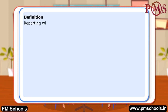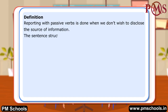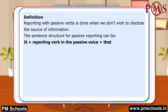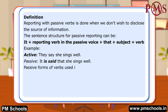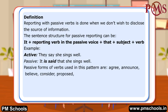Definition: Reporting with passive verbs is done when we don't wish to disclose the source of information. The sentence structure for passive reporting can be: it plus reporting verb in the passive voice plus 'that' plus subject plus verb. Example — Active: They say she sings well. Passive: It is said that she sings well. Passive forms of verbs used in this pattern include: agree, announce, believe, consider, propose, know, expect, report, claim, say, suggest, think, estimate, etc.